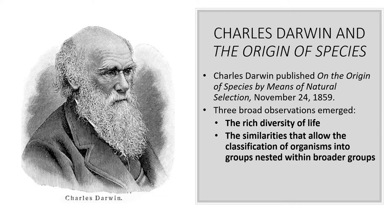He also notices that there are going to be similarities between different groups of organisms that allow them to be classified together. For example, you can look at butterflies and classify some as being in the same group. We can also classify butterflies and moths together because they have similar characteristics. Ultimately this shows that these organisms have all come about through a common ancestor.